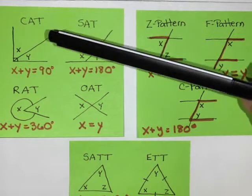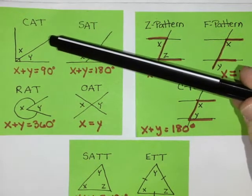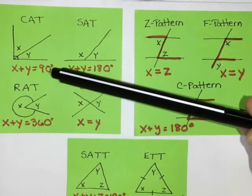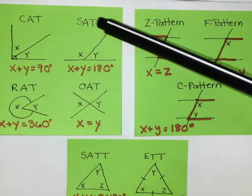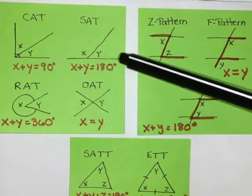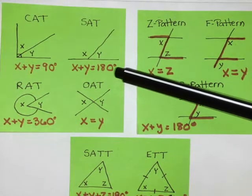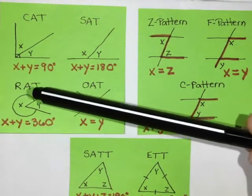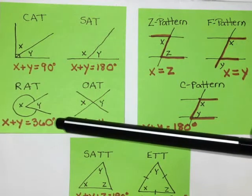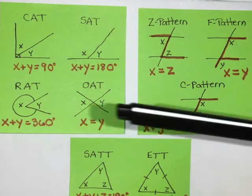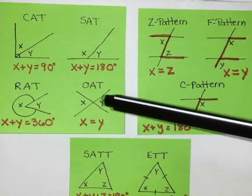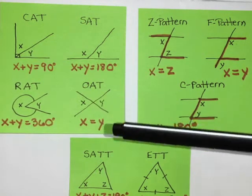The ones we've done so far: we have the complementary angle theorem, otherwise known as CAT, which says that two angles with that little square in the corner are going to add to 90 degrees. We have SAT, the supplementary angle theorem — for straight lines, two or more angles that make a straight line add to 180 degrees. RAT is the reflex angle theorem — angles going around a full circle add to 360 degrees. And the opposite angle theorem says that when two straight lines cross, the angles on opposite sides are equal.